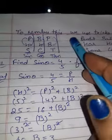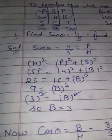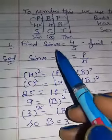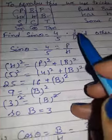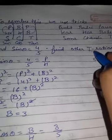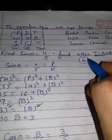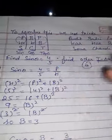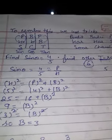Now we will discuss — I hope you are getting — this is the basics of trigonometry. Our first question is: find, given sine theta is equal to 4 by 5, find the other T ratios. There are six T ratios and one is already given to you.